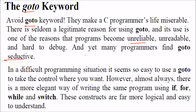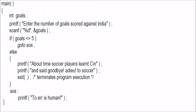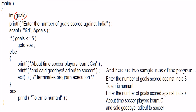Goto takes you to any part of the program, but you can write the same program more elegantly with if, while, or switch. The big problem with goto is you don't know where your flow of control has gone — you can skip a part, making that portion unreadable. With multiple gotos, the program becomes very difficult to handle. For example, if goals are less than 5, you go to label SOS. The SOS label followed by a colon is the flow-of-control target. If goals remain less than or equal to 5, certain code will never be executed.